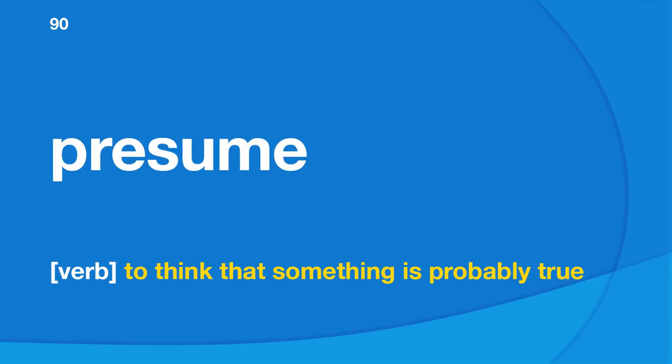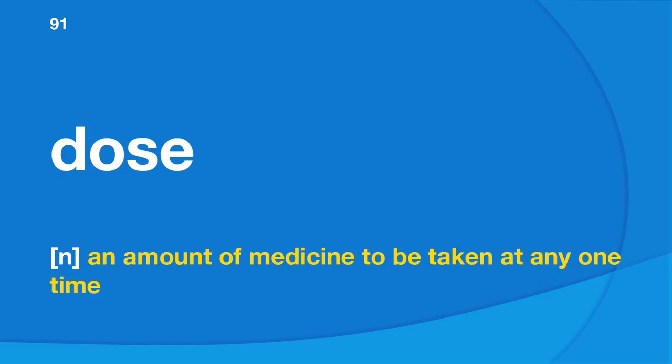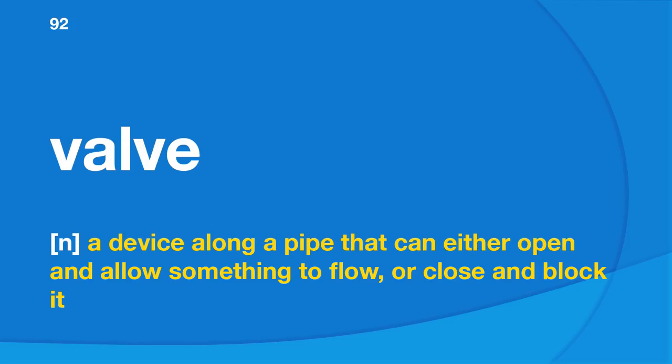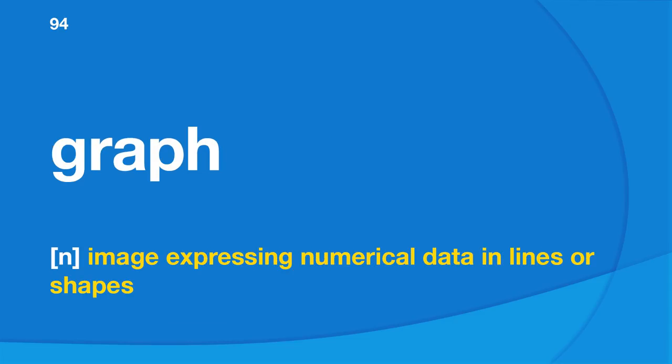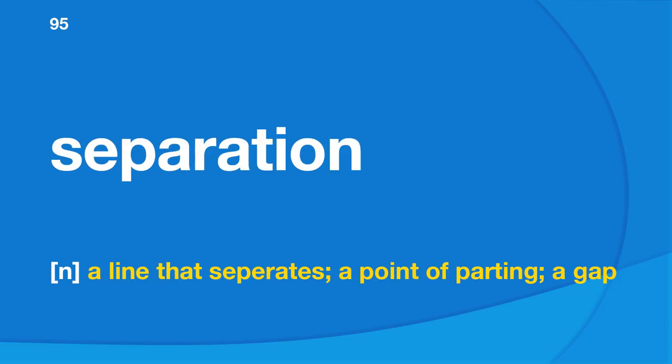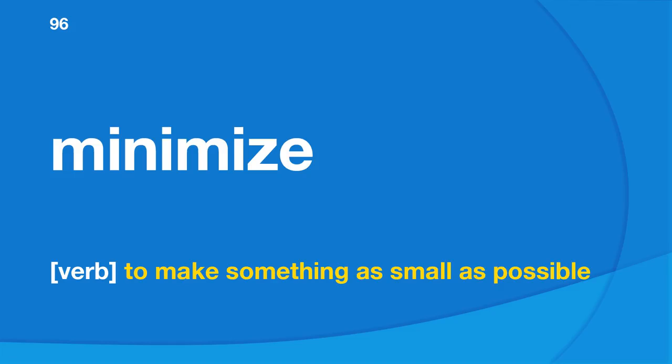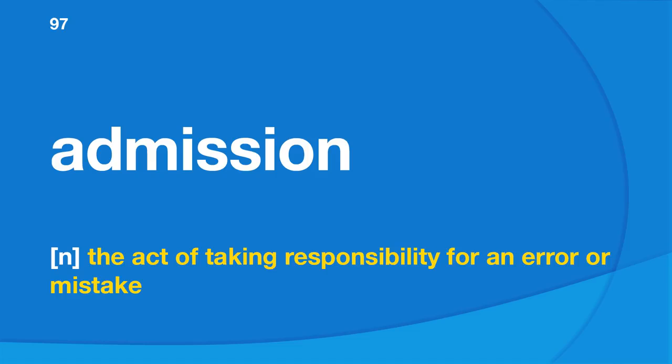Presume: to think that something is probably true. Dose: an amount of medicine to be taken at any one time. Valve: a device along a pipe that can either open and allow something to flow, or close and block it. Incredible: very hard to believe. Graph: expressing numerical data in lines or shapes. Separation: a line that separates, a point of parting, a gap. Minimize: to make something as small as possible.